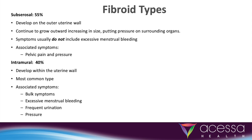Intramural fibroids are the next most common. They are within the uterine wall, creating heavy menstrual bleeding as well as pressure and bulk symptoms. Many women that present with heavy menstrual bleeding have intramural fibroids with or without the presence of submucosal fibroids.